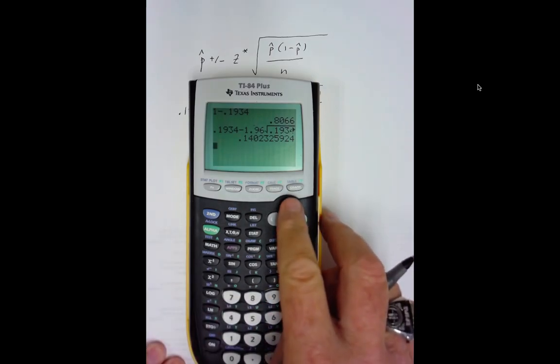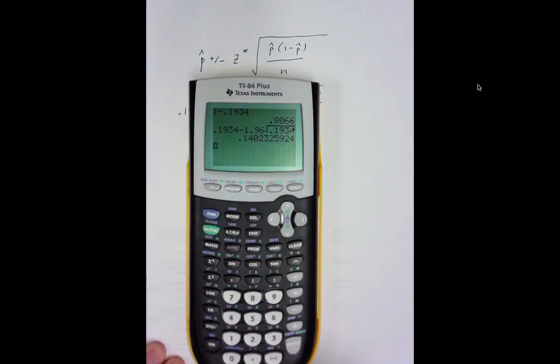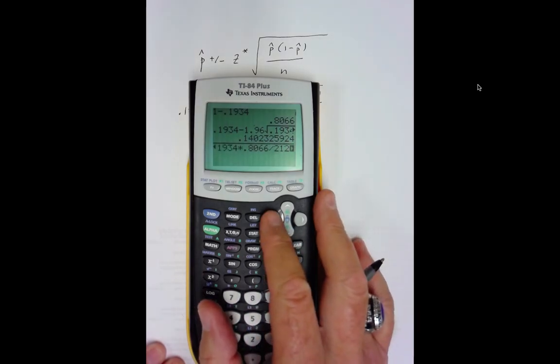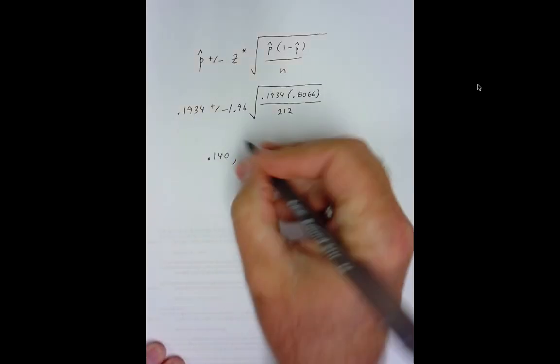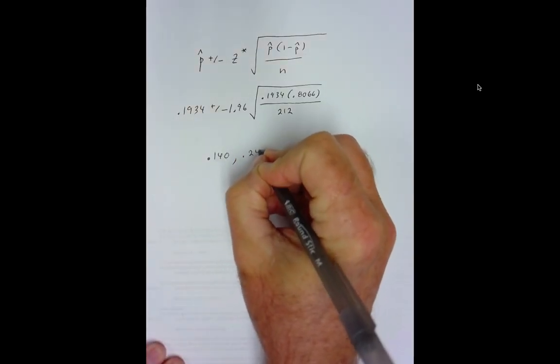To get my upper bound, I can just go second function entry. Don't get too hung up on this because to do these types of problems we're going to use StatCrunch which I'll show in just a second. Change that to plus, so I get 0.247.